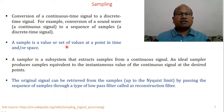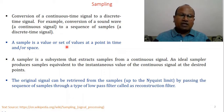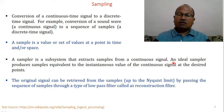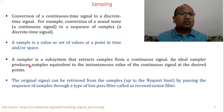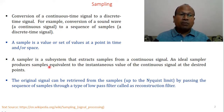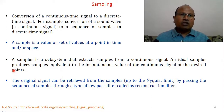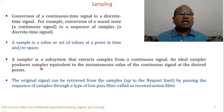This is the standard definition of a sample — a value or set of values at a certain point. When we talk about samples, we use a sampling operator or sampling function. A sampler is a subsystem which extracts samples from a continuous signal. An ideal sampler can produce samples equivalent to the instantaneous value of the continuous signal at the desired points, where different instantaneous values have different magnitudes or amplitudes.